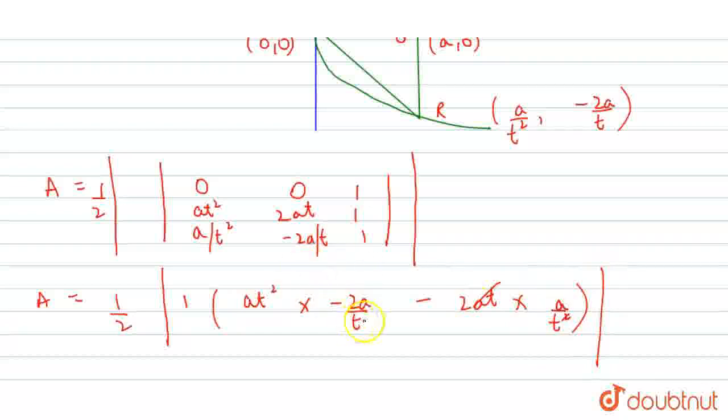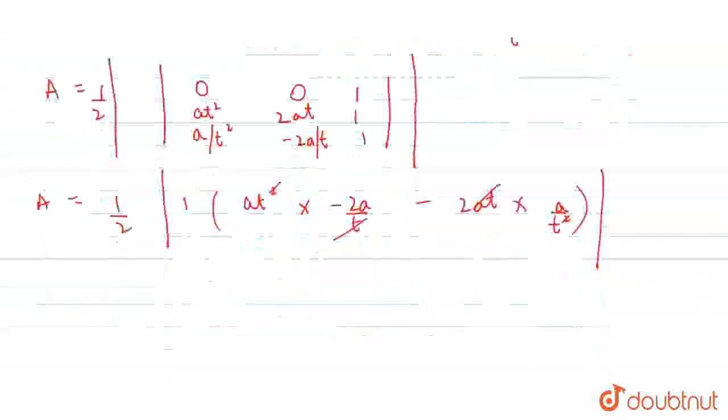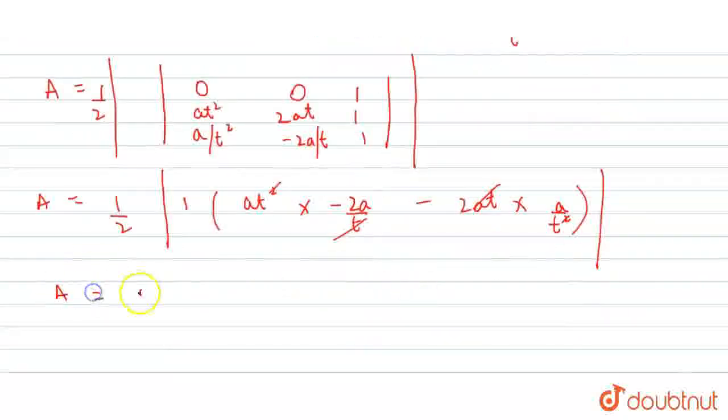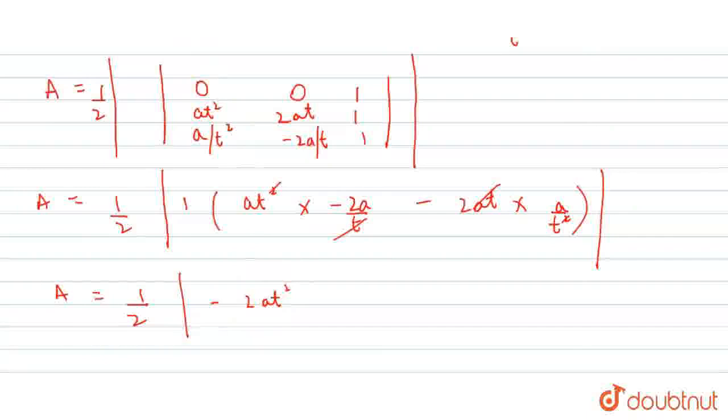Cancel out T terms. Left part is A equals 1/2 times (-2A²T - 2A²/T).